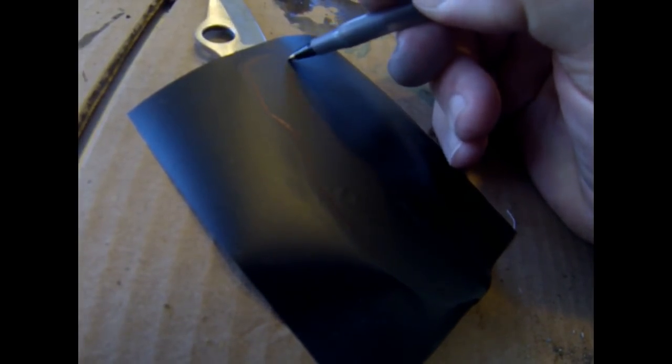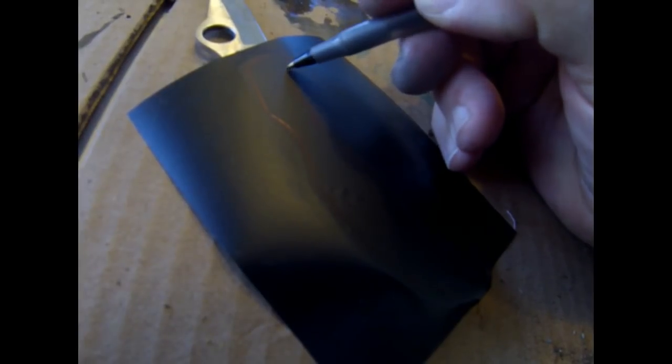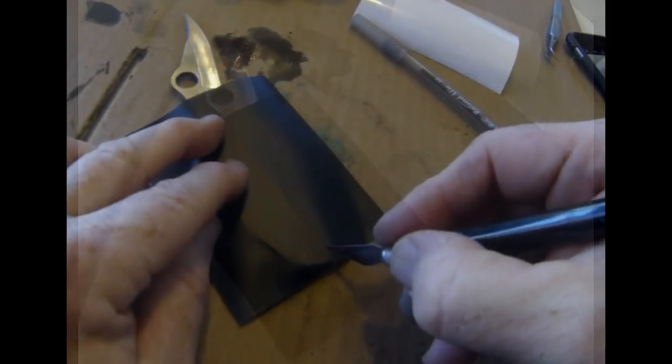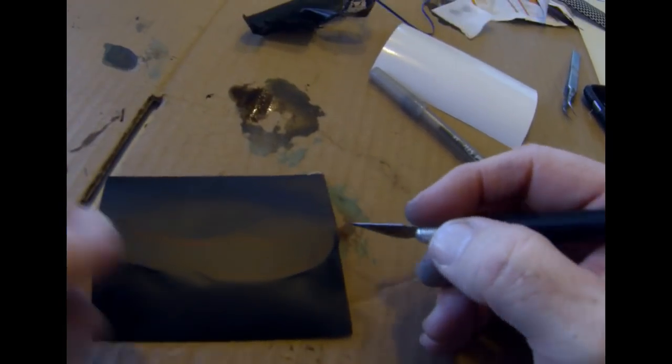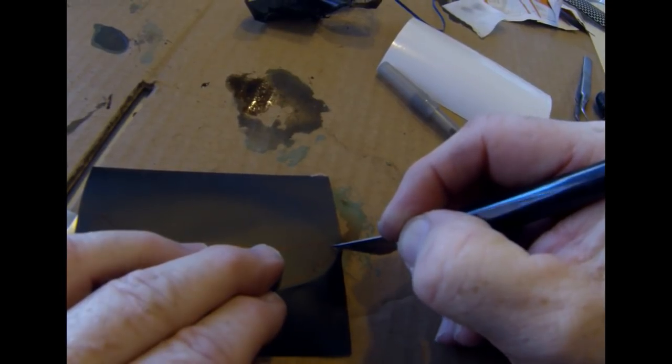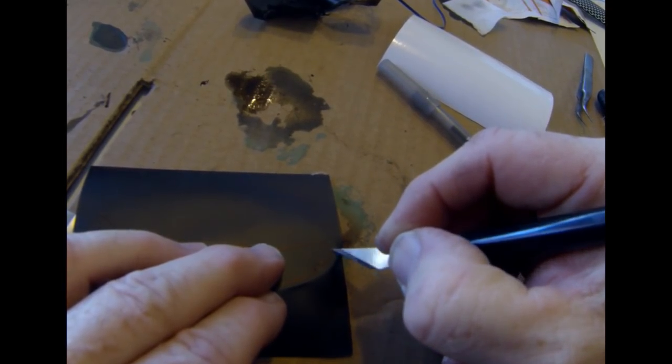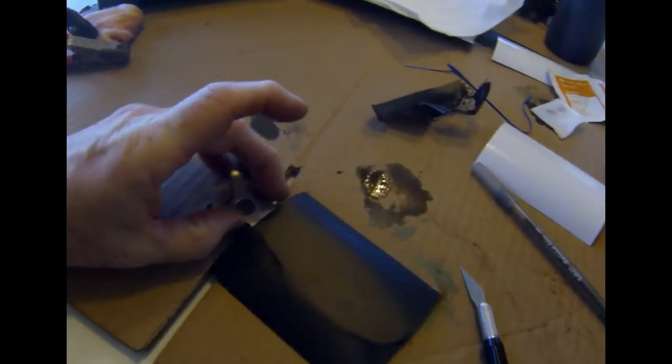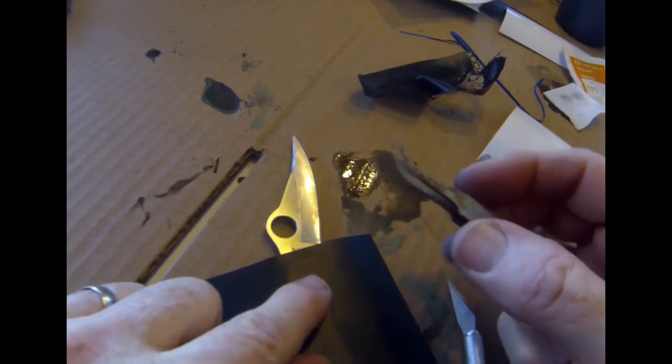And then after I'm done drawing that line, I'll trace that or I'll follow those lines with a razor knife. And just basically cut out the inside, exposing the entire area that I want to etch. And that vinyl is then going to protect or block any parts of the knife that I don't want etched.